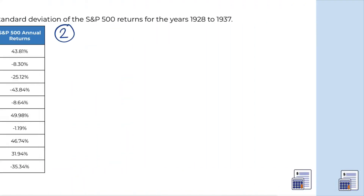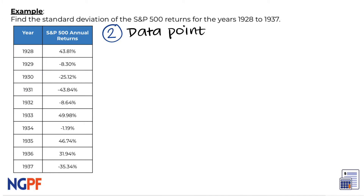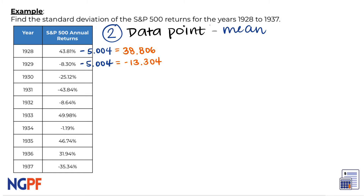Next, we have to find the distance between each data point and the mean from step 1. For this first line, I will subtract 43.81 minus our mean from step 1 of 5.004, which gives me 38.806. For the next year, I can subtract negative 8.30 minus 5.004, which gives me negative 13.304. I will now complete the step for the rest of the data points.